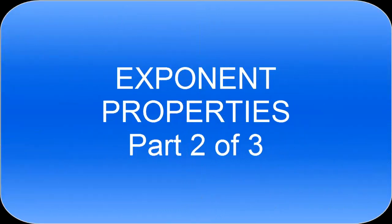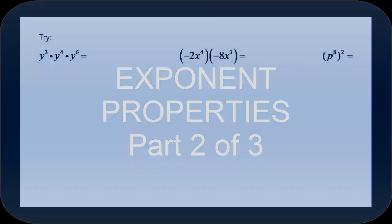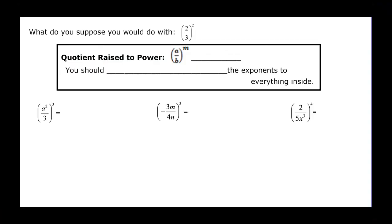This video is part 2 of exponent properties. So a new property. Suppose we had 2/3 and we had it squared. Well that would be 2/3 times 2/3. And if we multiply that gives us 4/9. And if you look back, 2 squared is 4 and 3 squared is 9.